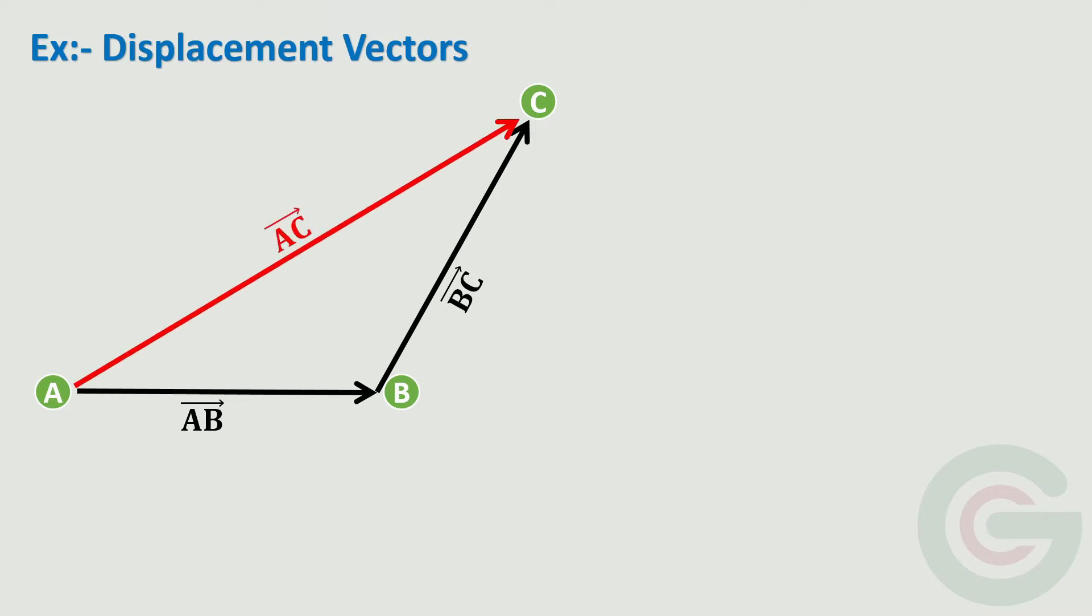Now what will be the resultant or net displacement from point A to point C? It is the vector AC, right? If we can observe here that the vector joining points A, B and C are forming like a triangle. Therefore, it is called the triangle law.